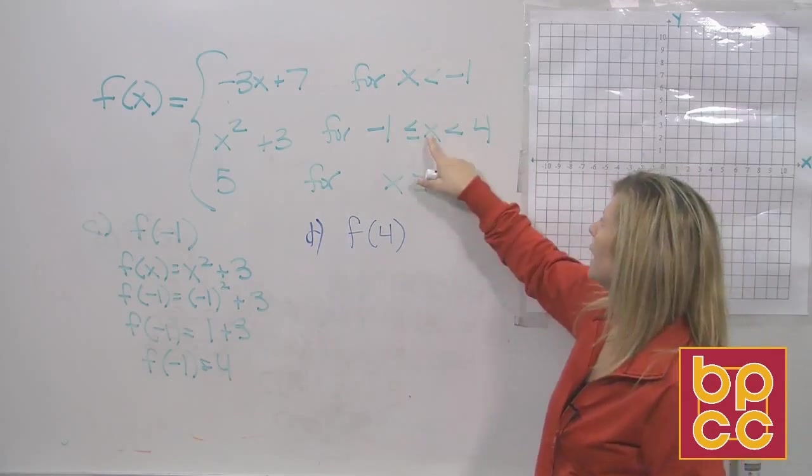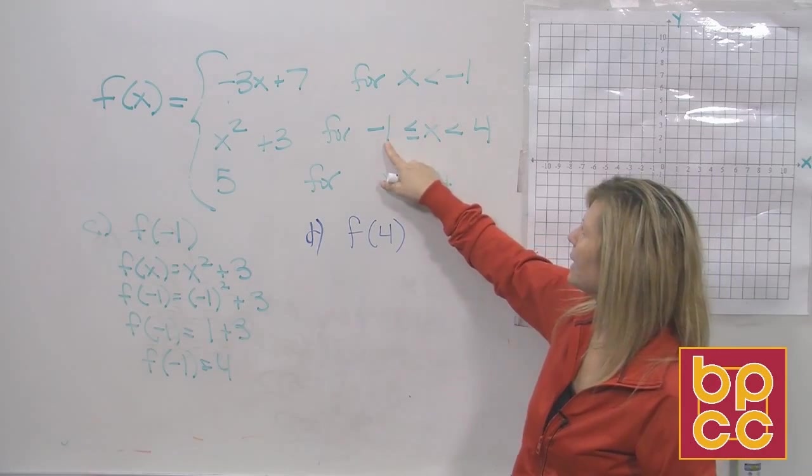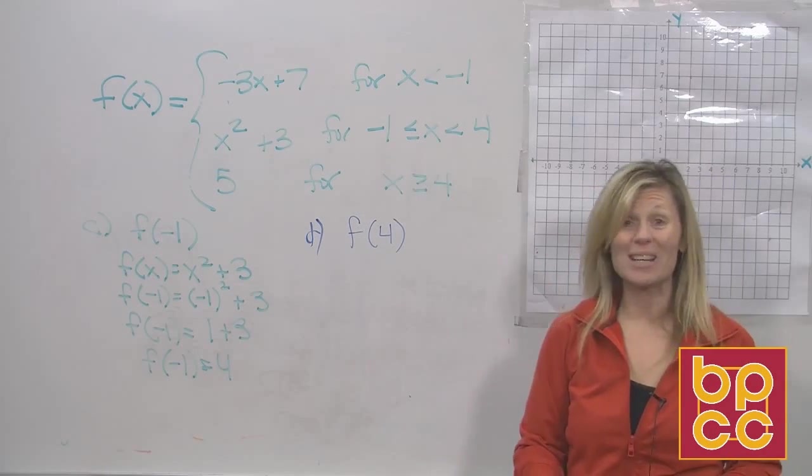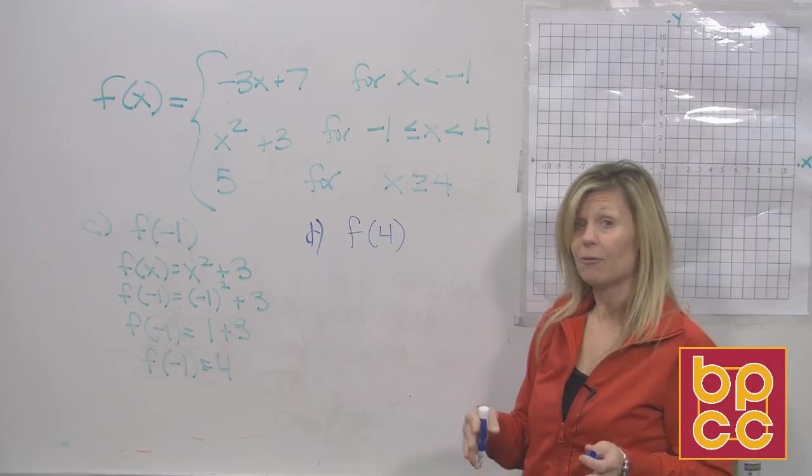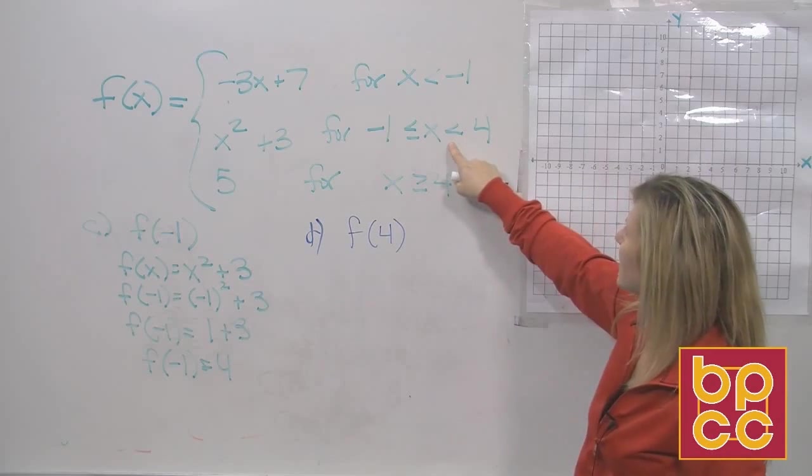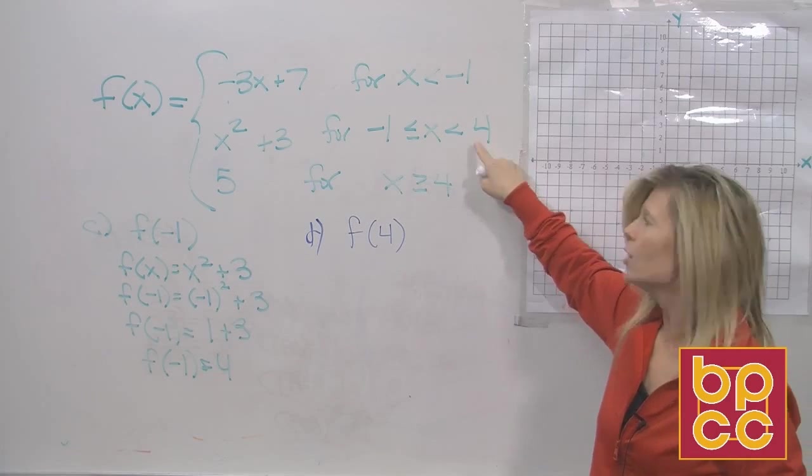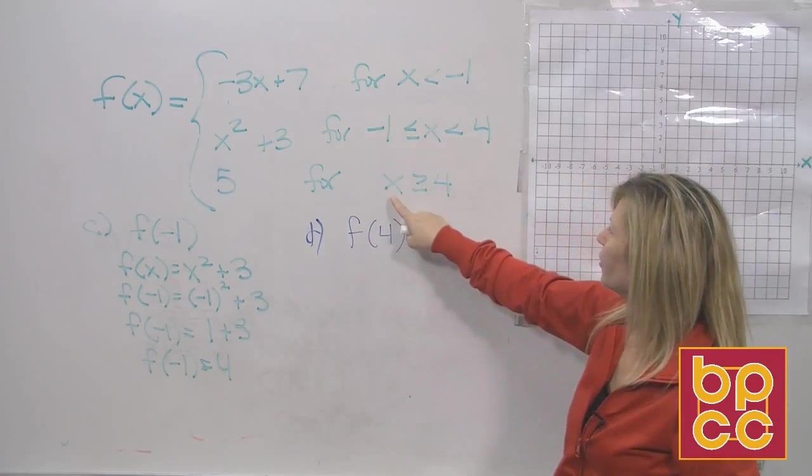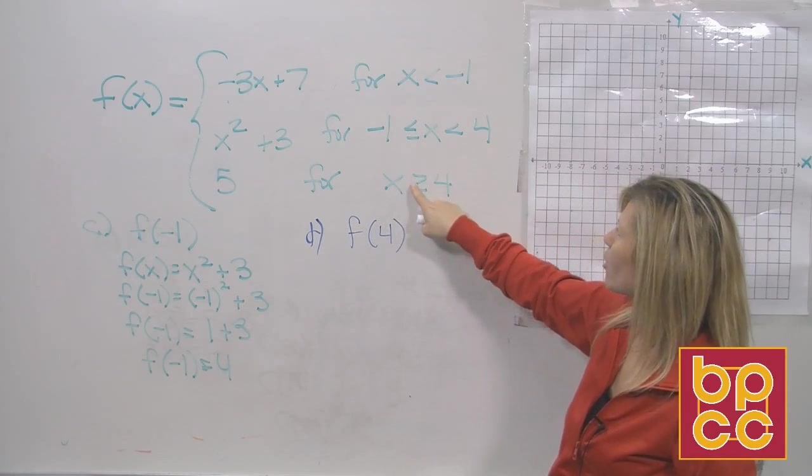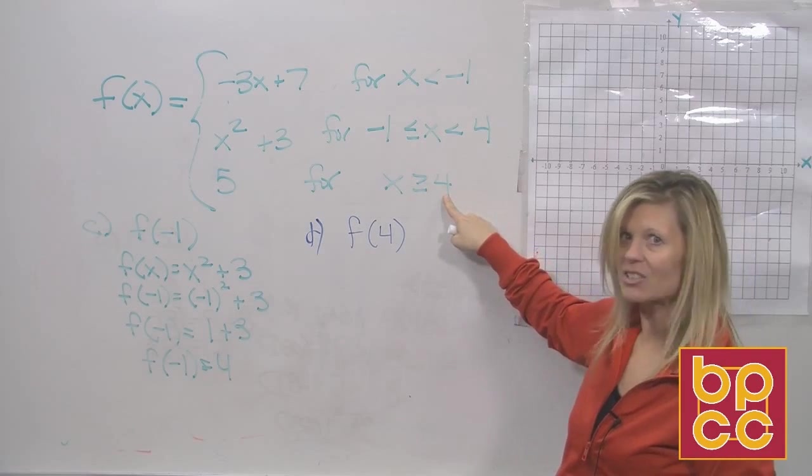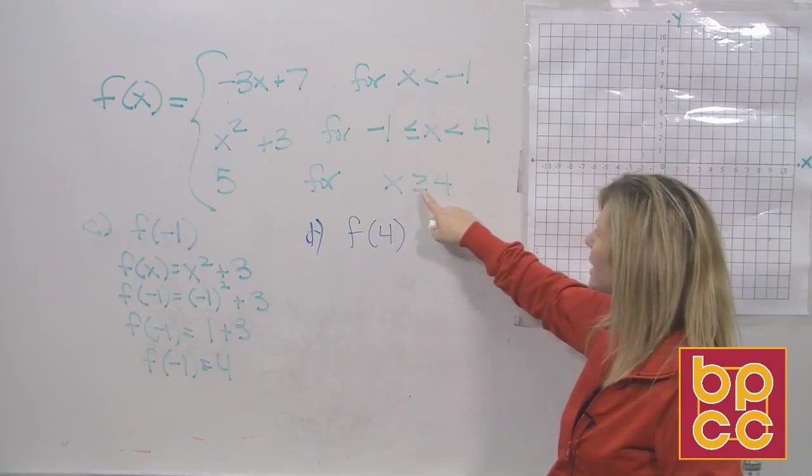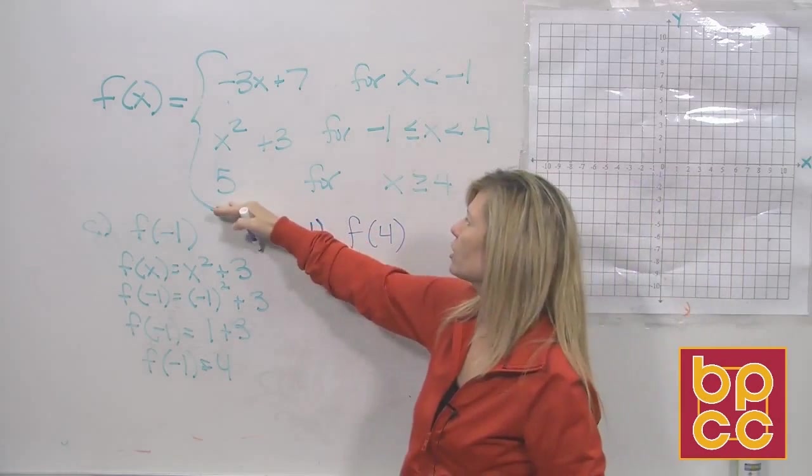Is 4 less than negative 1? No. Is 4 in between negative 1 and 4? No, it's not in between. 4 equals 4. Well, does that say equals? Does that say 4 equals 4? No, it does not. So we're not using the second piece. This says 4 is greater than or equal to 4. That's correct. 4 is equal to 4. So we'll be using the third piece.